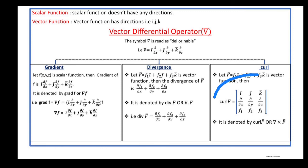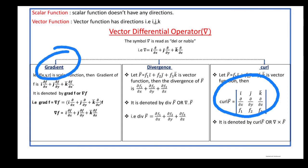This is the formula of curl f-bar, and it is denoted by curl f-bar or del cross f-bar. These are the definitions of gradient, divergence, and curl.